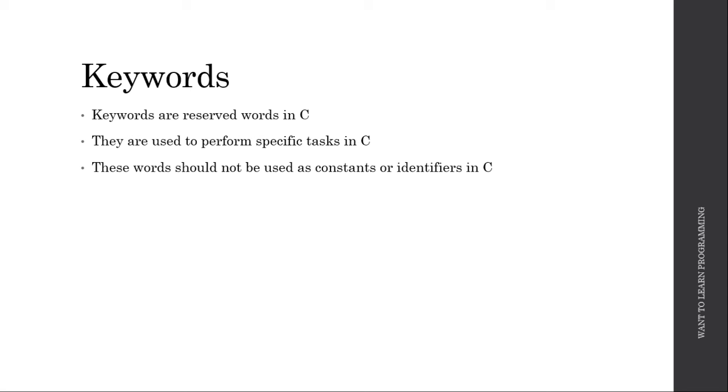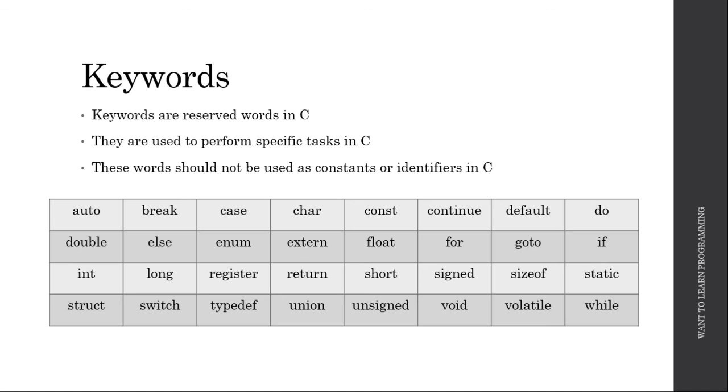There are 32 keywords present in C programming language. Some of the common ones which you already know are int, double, return, etc. In future videos, we will look at what these keywords do and what tasks they help us perform in C programs.